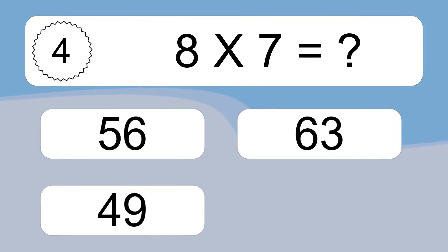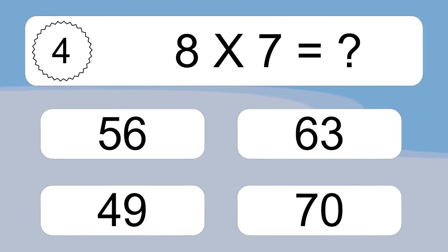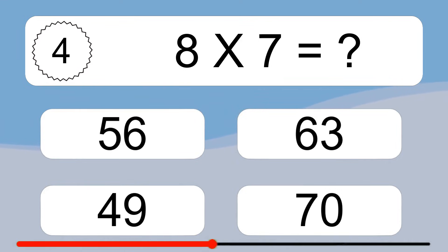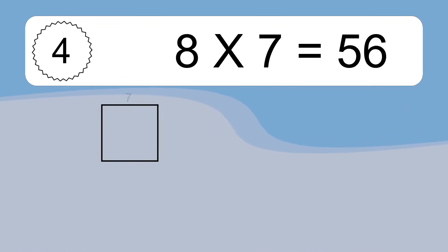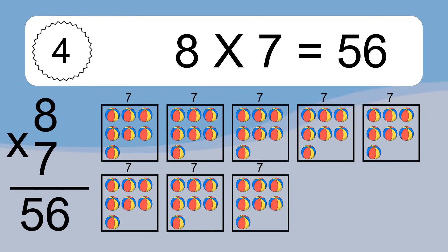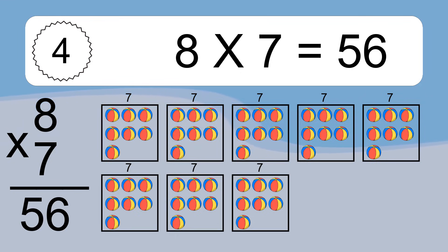8 times 7 equals what? We have 8 boxes, and each box has 7 colorful balls inside. If you count all the balls in all the boxes together, you will have 8 times 7 balls. This equals 56 balls.